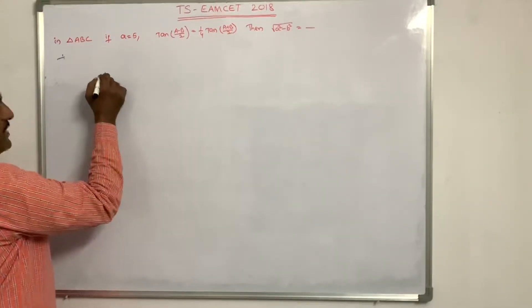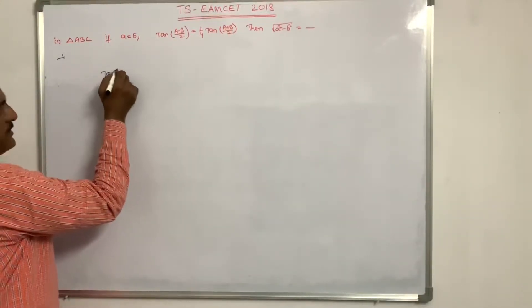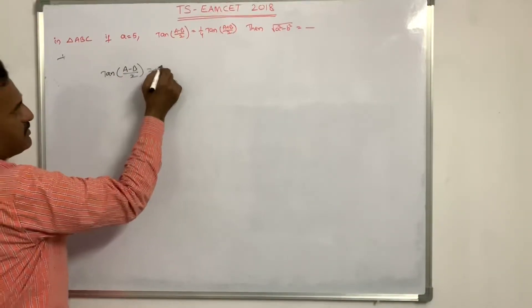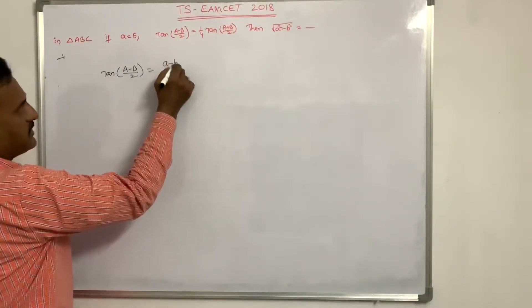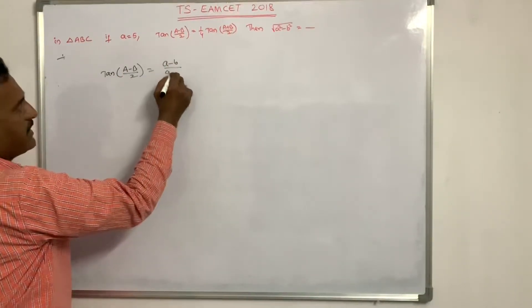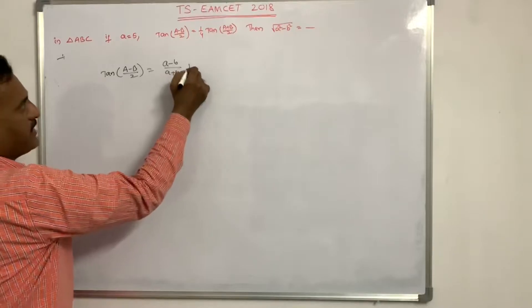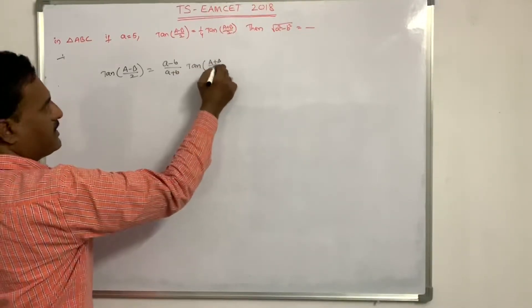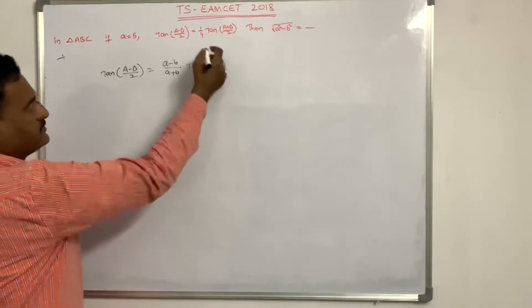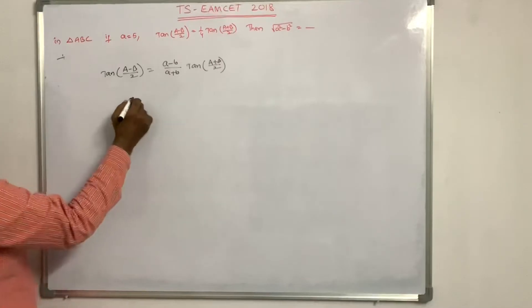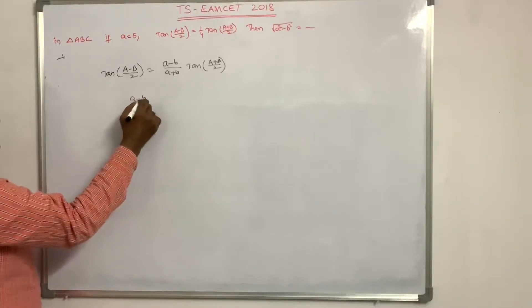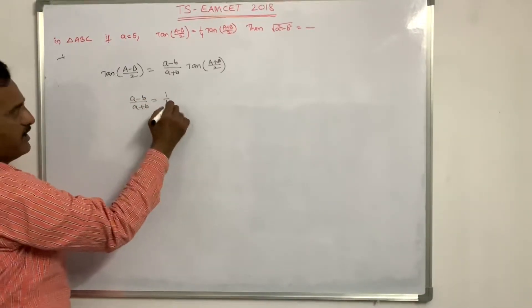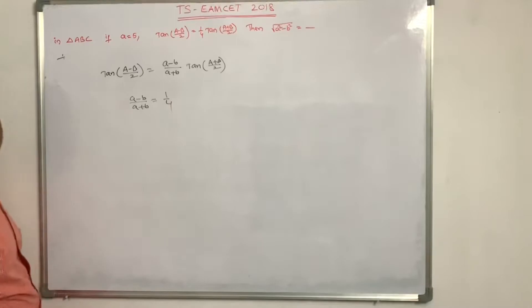Using the tangent rule: tan((A−B)/2) = [(a−b)/(a+b)]·tan((A+B)/2). Here the ratio (a−b)/(a+b) is given as 1/4.